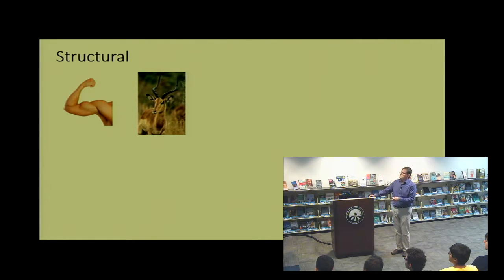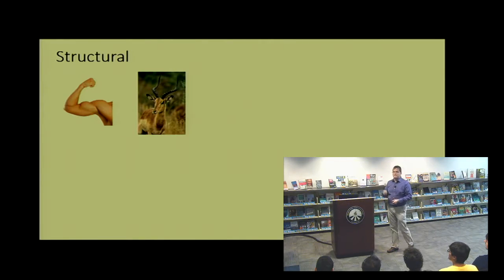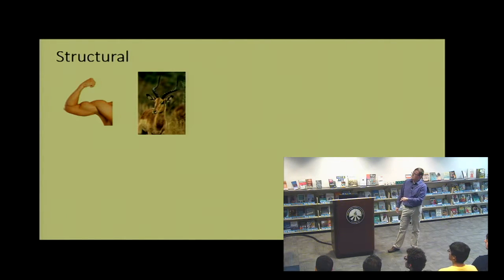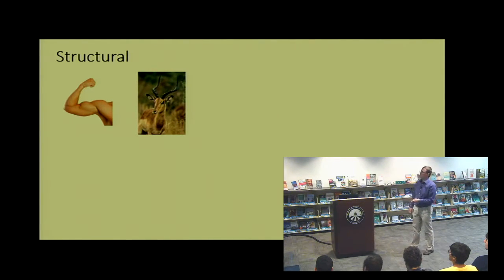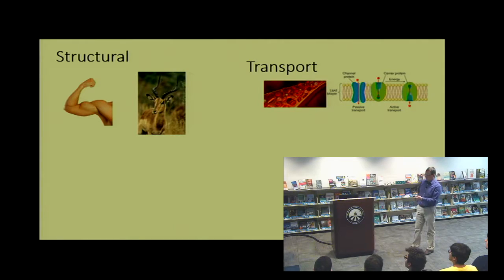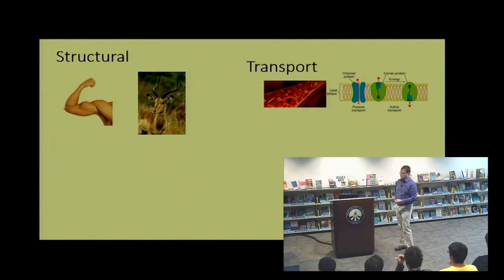Proteins can have structural functions in cells. Here I have a picture of an impala — the rigidity of those horns is dictated by a protein called keratin, the same protein found in your hair. Proteins are also found in muscle fibers, providing structure and movement. Proteins can also be involved in transport: red blood cells have a protein called hemoglobin that binds to oxygen, transports it to your cells, releases oxygen there, picks up carbon dioxide, and brings it back to your lungs.